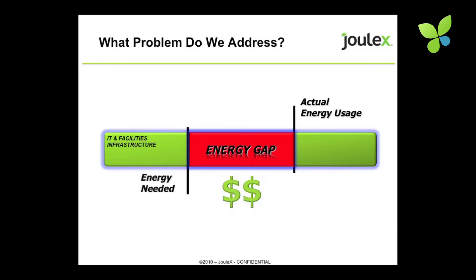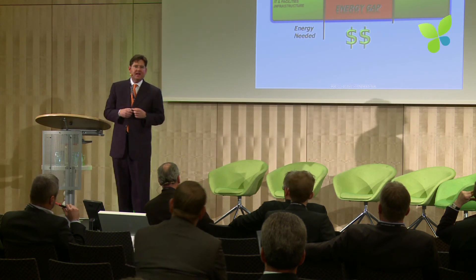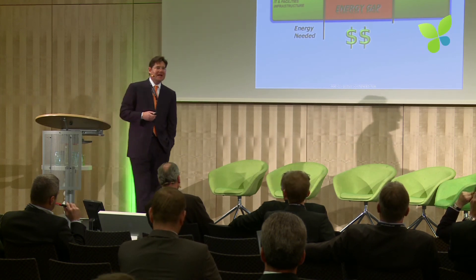So what Julex does is help companies identify how much energy is being consumed across their distributed IP infrastructures — typically about 50% of a company's energy consumption, 50% in lighting and HVAC, and about 50% in the computational infrastructure. We identify where systems are being unutilized or underutilized and allow you to control them. That energy gap is real dollars, euros, and yen, and we return those cost savings back to the customer.